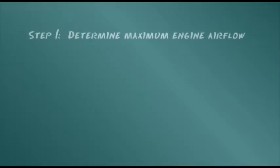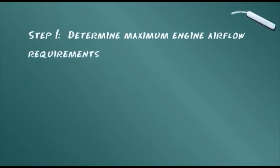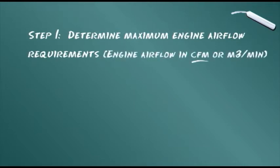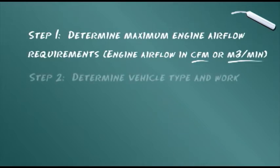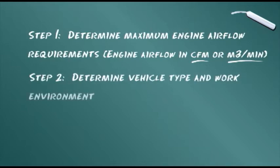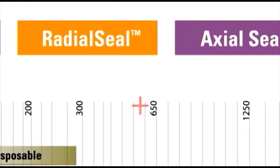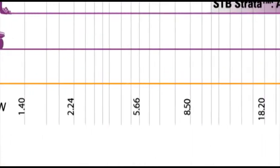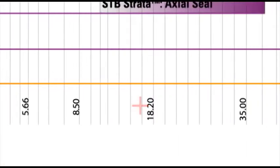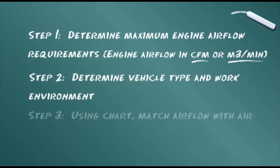The first step is to determine maximum engine airflow requirements. This will be specified in CFM — cubic feet per minute — or the metric equivalent, cubic meters per minute. The next step is to determine the type of vehicle and its environment. We're assuming a medium dust environment. For this example, let's assume the engine airflow requirement is 600 CFM, or its metric equivalent of 17 cubic meters per minute.